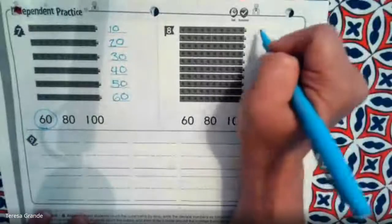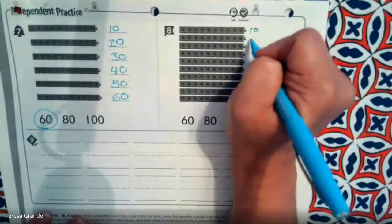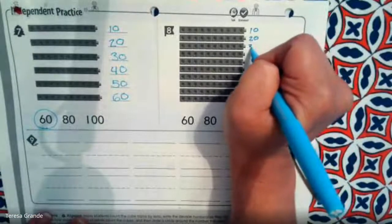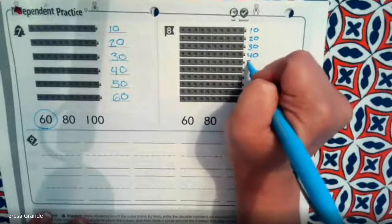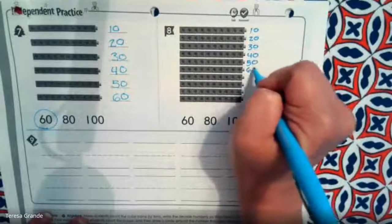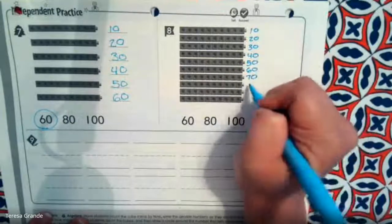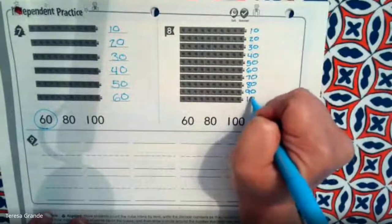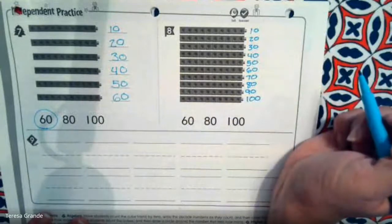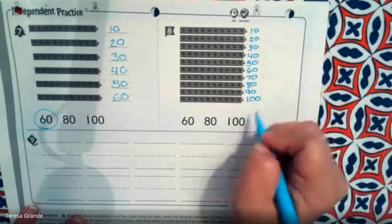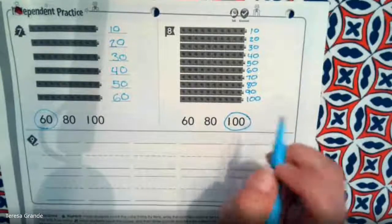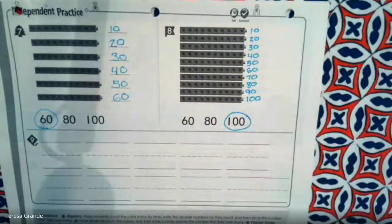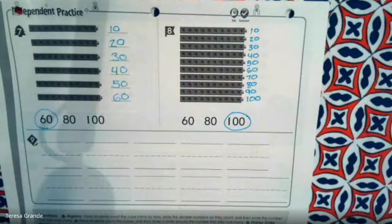And let's try our last one. 10, 20, 30, 40, 50, 60, 70, 80, 90, 100. Find the number 100. Excellent job. Very good work today, kindergarten. I'm counting by 10s to the number 100.